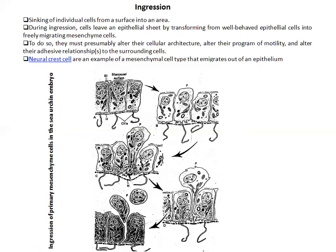They form three germ layers and through successive organogenesis form different organ structures. As in the case of ingression, cells dissociate from a specific layer — sinking is the basic feature. Ingression means the sinking of individual cells from a surface into an interior area. Here we observe primary mesenchymal cells in the case of sea urchin and how a single cell, in five successive stages, becomes dissociated from the surface layer. This cell is destined to form specific structures.